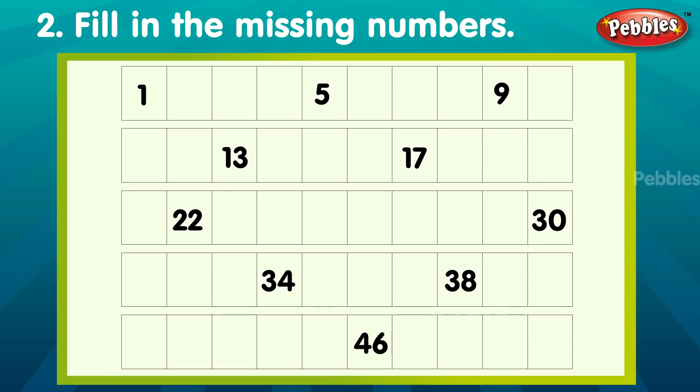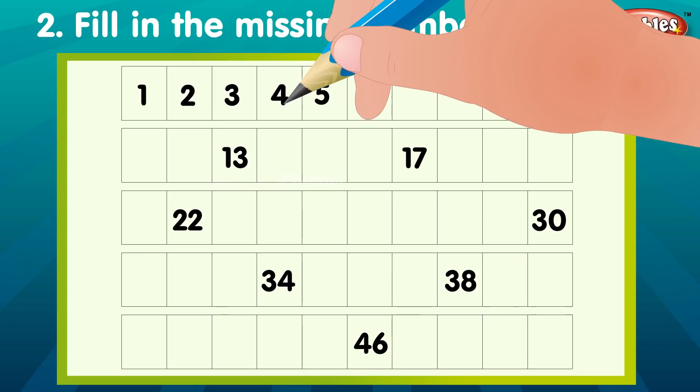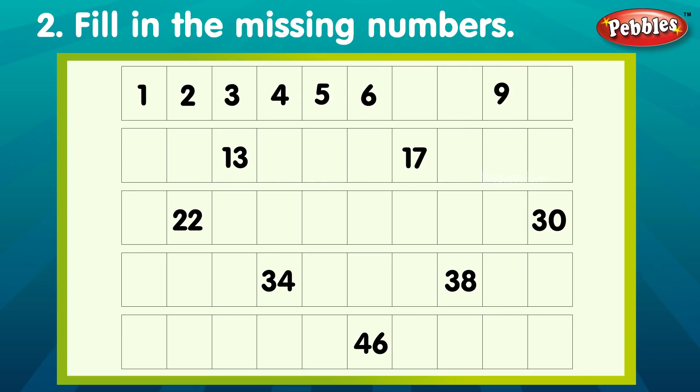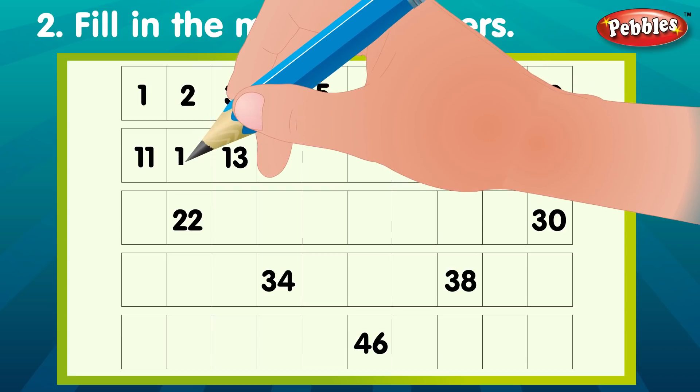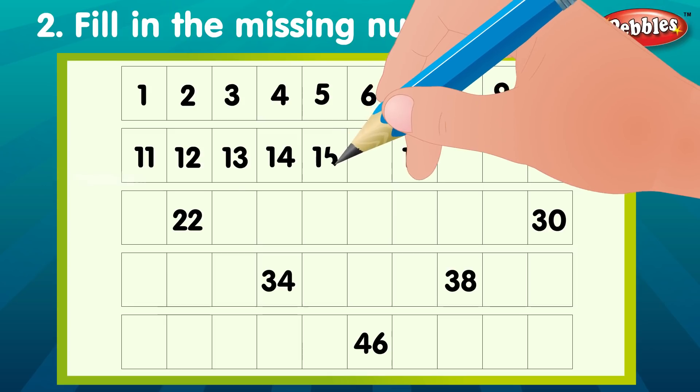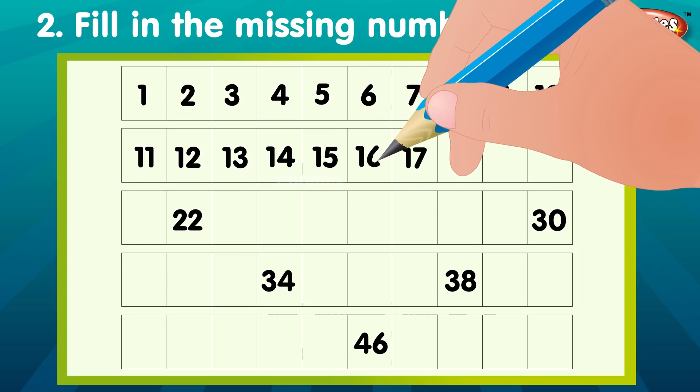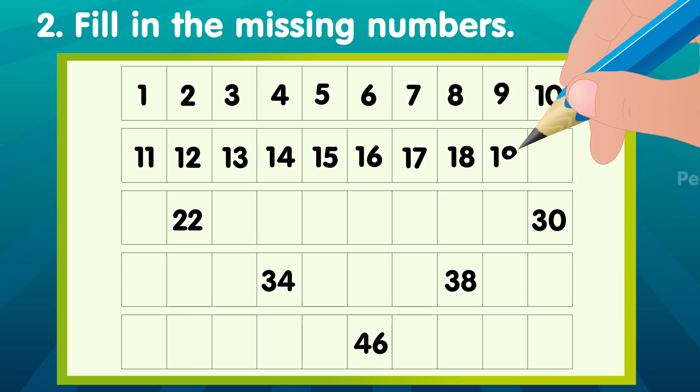Fill in the missing numbers. Two. Three. Four. Six. Seven. Eight. Ten. Eleven. Fourteen. Fifteen. Sixteen. Eighteen. Nineteen. Twenty.